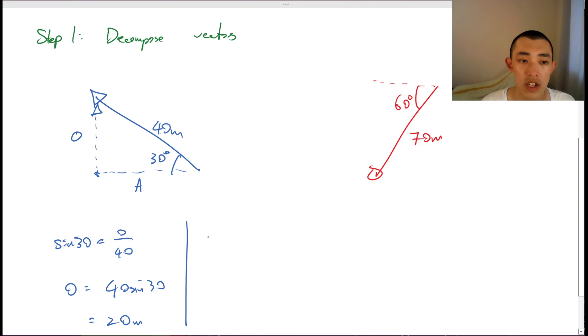Let me do the adjacent one. So cosine 30 is equal to adjacent over 40. I can say that my adjacent is equal to 40 cosine 30 is equal to 34.6 meters. So let me write that onto my thing here. 34.6. This one is 20.